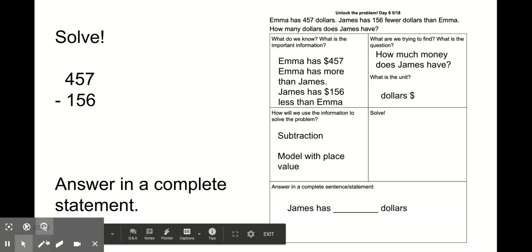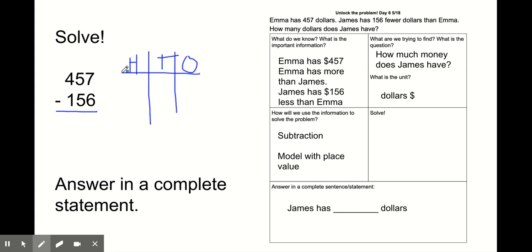Now it's time to solve the problem. Since I'm doing it with a place value chart, I will do hundreds, tens, ones. And then I'll use my model in the hundreds, tens, ones. All of my work would go right there.